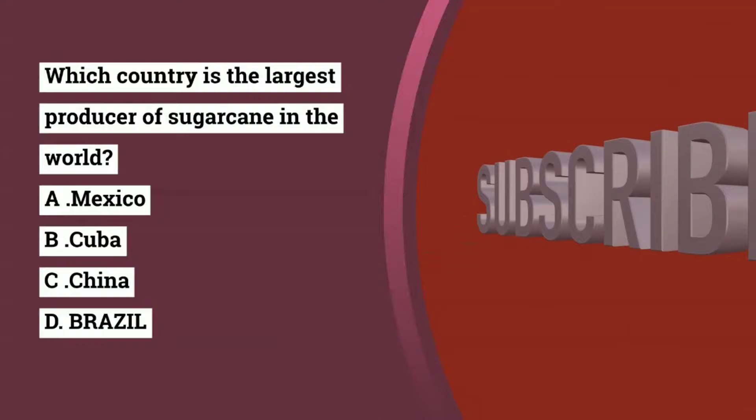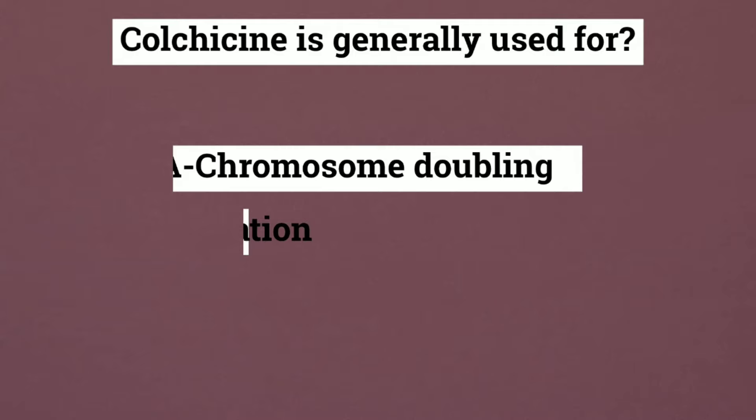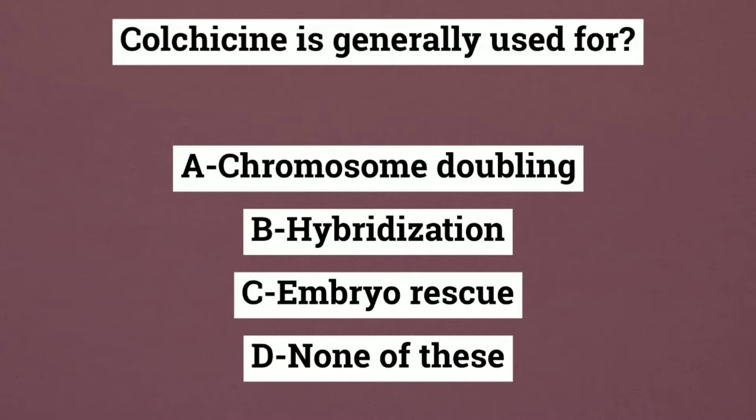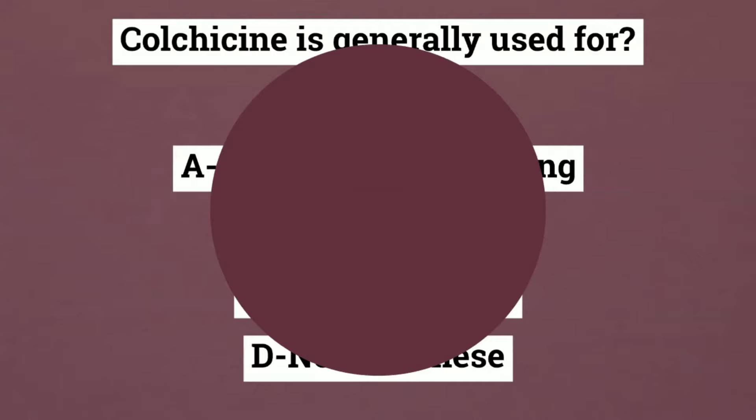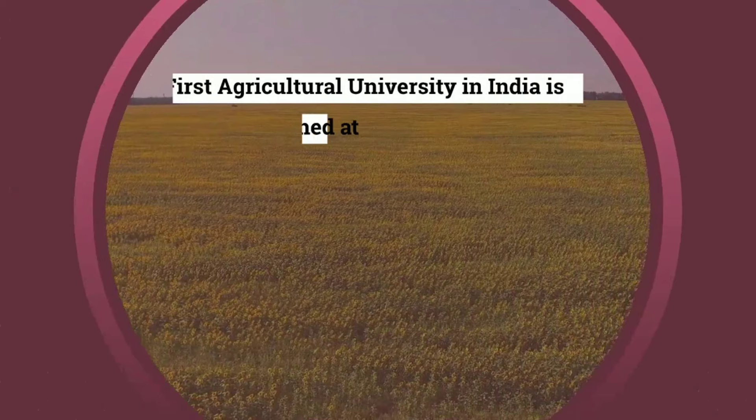Question number 17: colchicine is generally used for which of the following? Options are chromosome doubling, hybridization, embryo rescue, or none of these. The correct answer is chromosome doubling. Colchicine is an important mutagen that works by preventing microtubule formation and doubles the number of chromosomes; hence it is used for chromosome doubling.